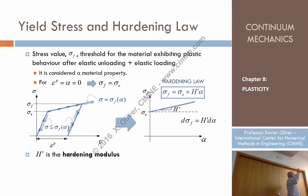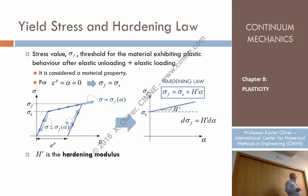When the material is at a point where the yield function equals zero, it can either continue loading — moving further along the elastoplastic curve — or unload and behave incrementally elastically. The yield function acts like a traffic light: depending on its value, you know whether the material will behave elastically or elastoplastically, and whether loading or unloading is occurring.